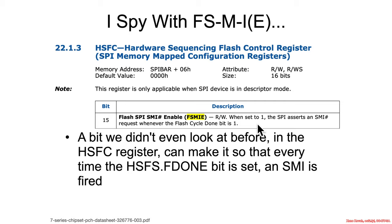This means that when you initiate a flash transaction — whether a read or write — the hardware sets the flash done bit to one when it completes. If the FSMIE bit was set when the flash cycle started, an SMI will fire off when it finishes. This happens before the code on the operating system running on the main CPU even gets an opportunity to check that the done bit is set.